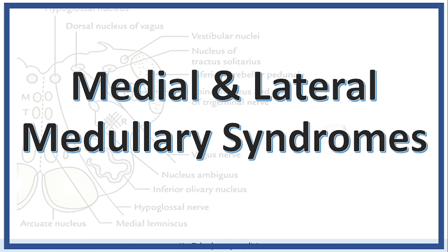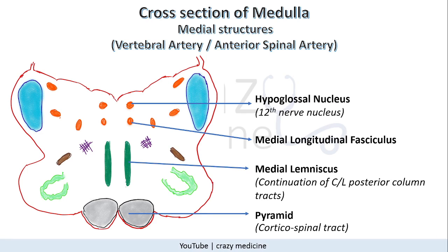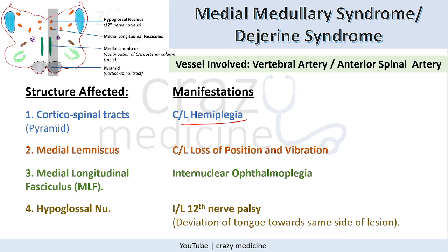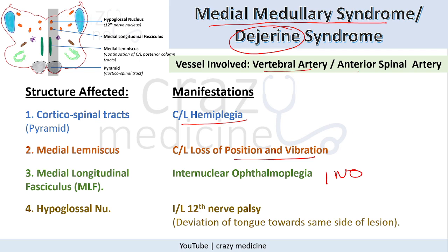Now, medullary syndromes include medial and lateral medullary syndrome. The medial structures of the medulla include the 12th nerve nucleus (hypoglossal nerve), the medial longitudinal fasciculus (MLF) which connects the ipsilateral 6th nerve to the contralateral 3rd nerve for horizontal gaze movement, the medial lemniscus which is the continuation of the contralateral posterior column tract, and the pyramid (corticospinal tract). Involvement of these structures manifests as contralateral hemiplegia, contralateral loss of position and vibration, internuclear ophthalmoplegia (INO), and deviation of the tongue towards the same side of the lesion due to 12th nerve palsy. This is also known as Dejerine syndrome; the vessel involved may be the vertebral artery or anterior spinal artery.